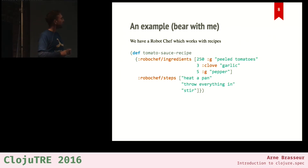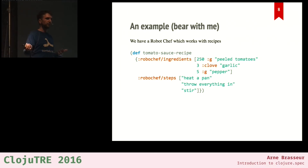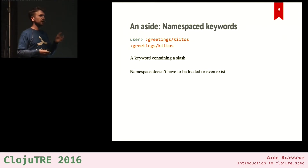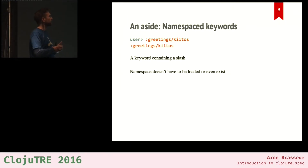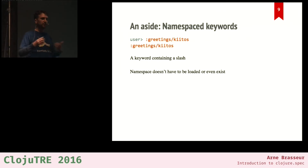Our robot chef needs recipes. Recipes have a certain structure, and you'll see that I'm using namespace keywords throughout. People who use Datomic or certain libraries are already familiar with them. A namespace keyword is really nothing special — it's just a keyword containing a slash. Before the slash is what we call the namespace, or the prefix. This prefix might correspond with an actual existing namespace, but it doesn't have to.